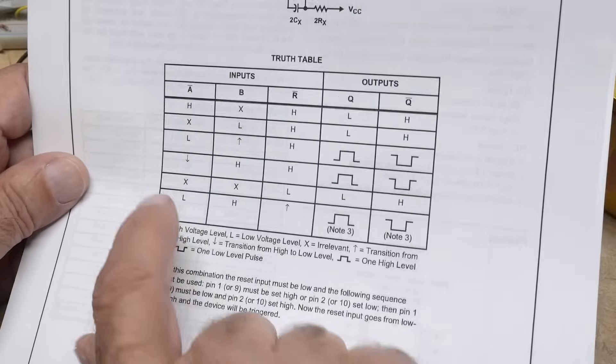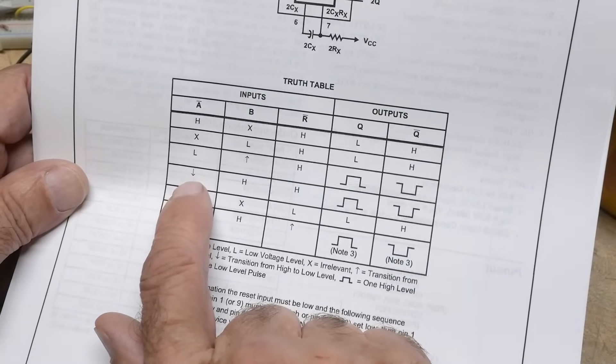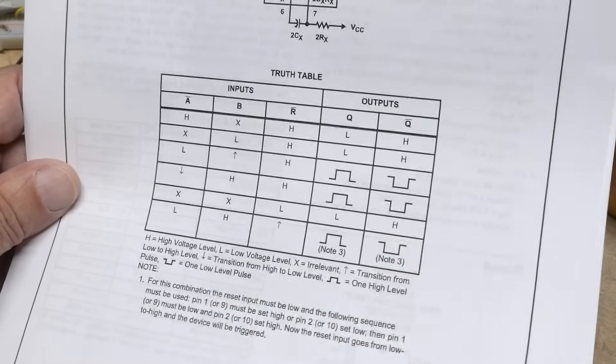So, like I said, you can either have a rising edge on B, or you can have a falling edge on not A. And then you get the pulses out.